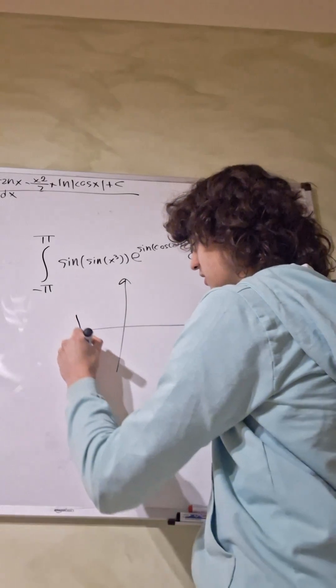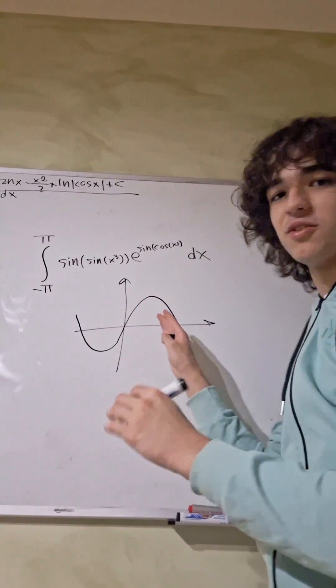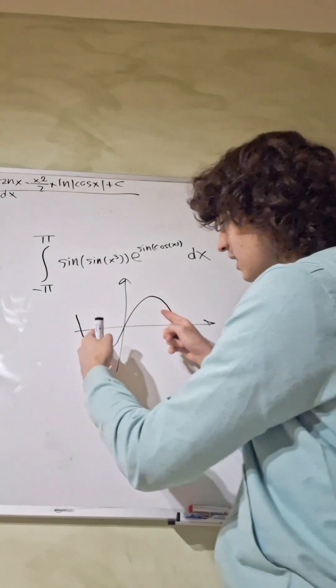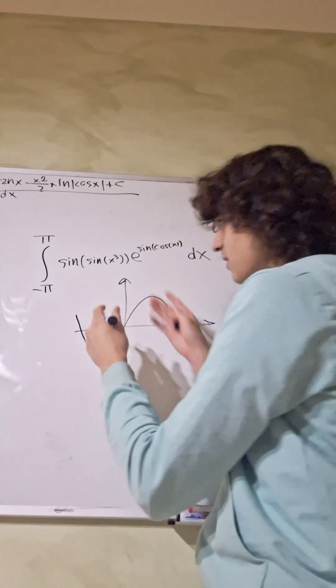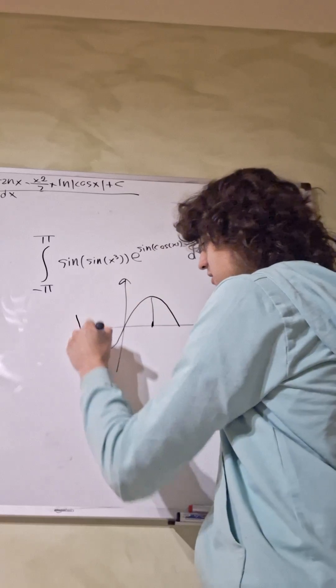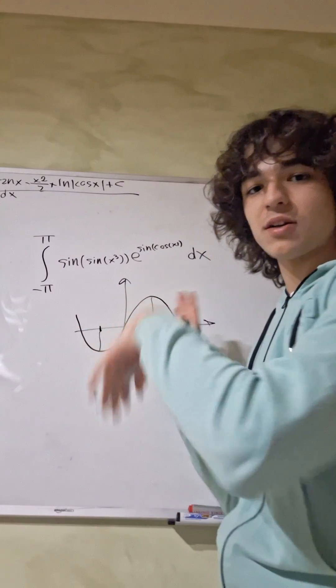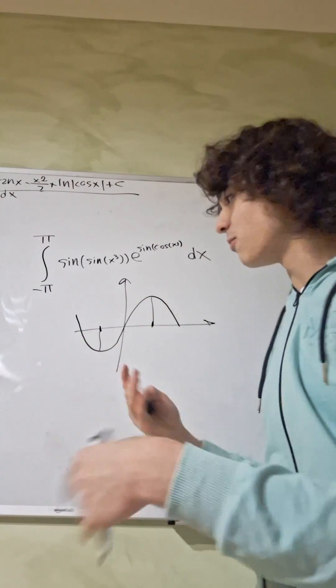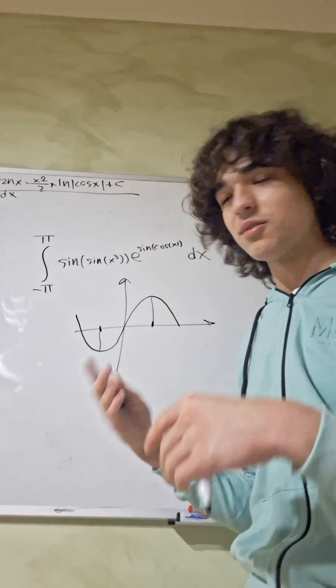so if it goes like this on one side, it goes the opposite way on the other, if we want to find the definite integral, so the area under this curve, as you can see, the areas are equal, but opposite in sign, so they will cancel out, and the result is zero.